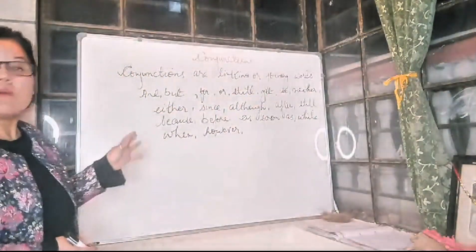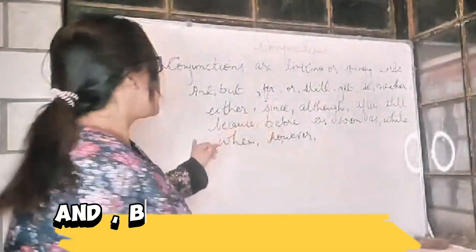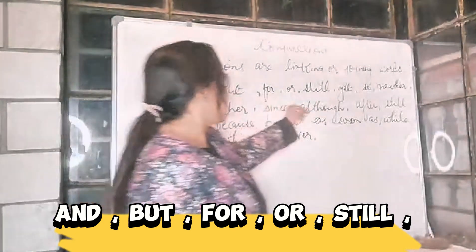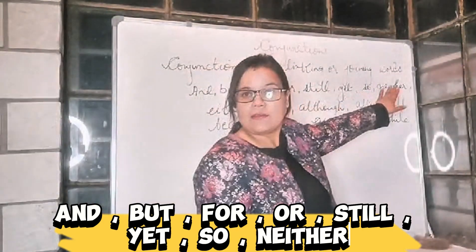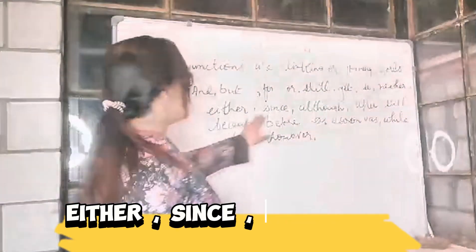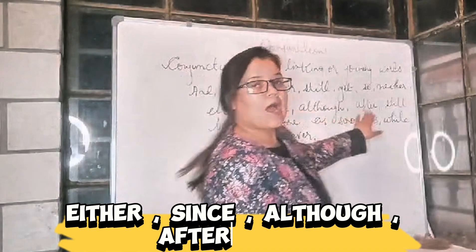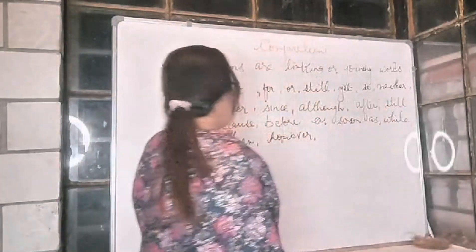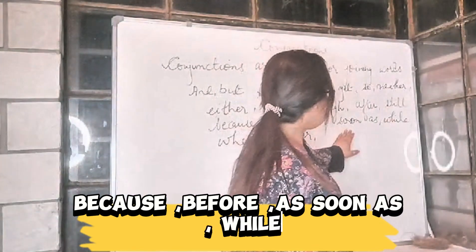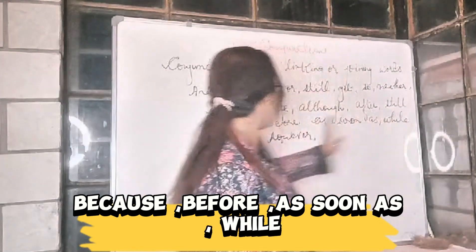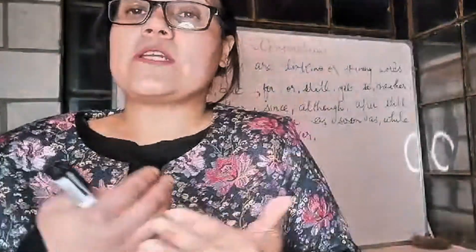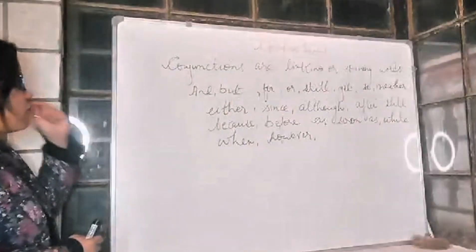We call them conjunctions. Some examples are: And, But, For, Or, Still, Yet, So, Neither, Either, Since, Although, After, Because, Before, As Soon As, While, When, However — and so on. All these words help in joining two parts of a sentence or joining words together.